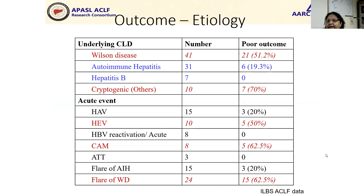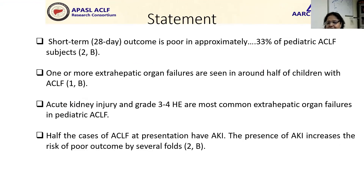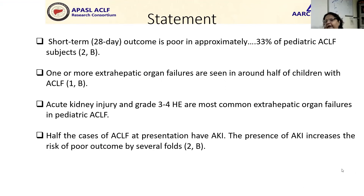The outcome by etiology shows it is worst in Wilson's disease. Wilson's disease ACLF and cryptogenic ACLF will mostly be part of the mortality. The consortium statement is that short-term outcome is poor in approximately 33% of pediatric ACLF subjects. One or more extrahepatic organ failures are seen in around half of these children. Acute kidney injury and grade three to four hepatic encephalopathy are the most common extrahepatic organ failures. Half of the cases of ACLF have AKI, and the presence of AKI increases the risk of poor outcome by several folds.